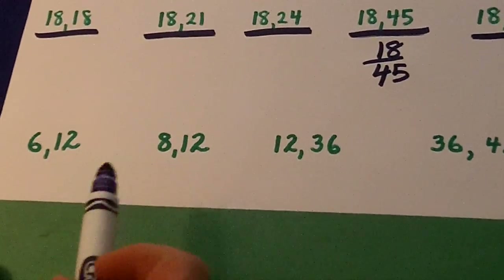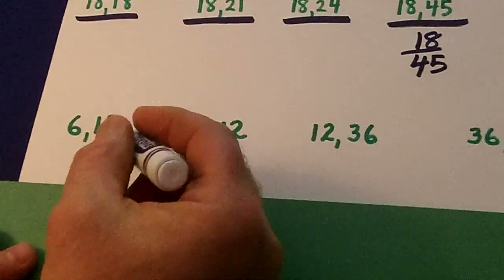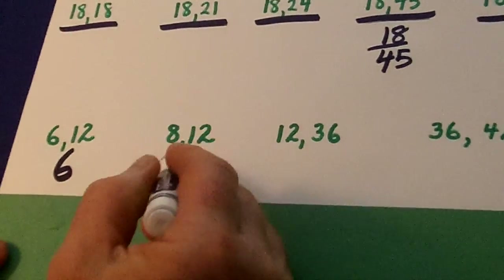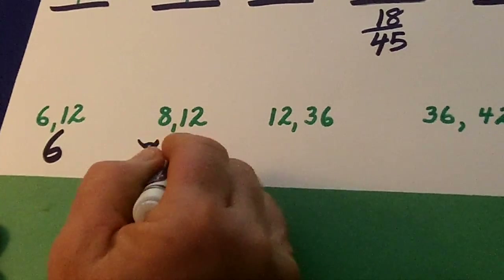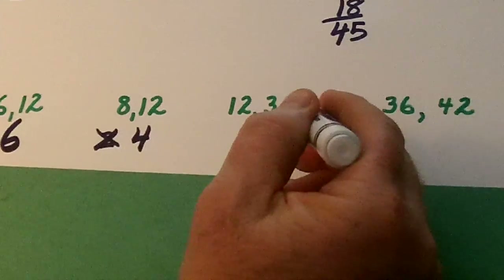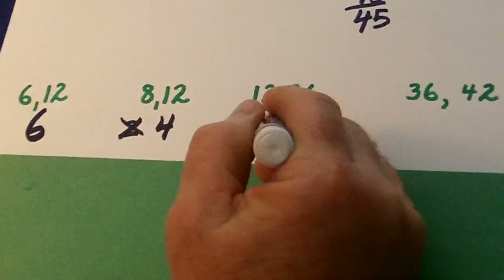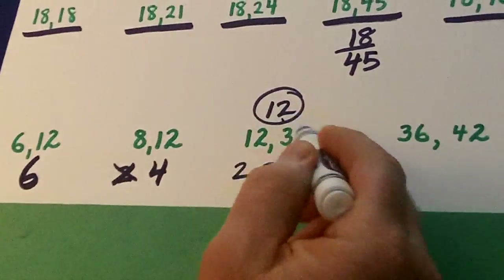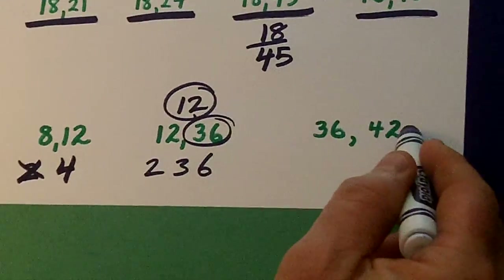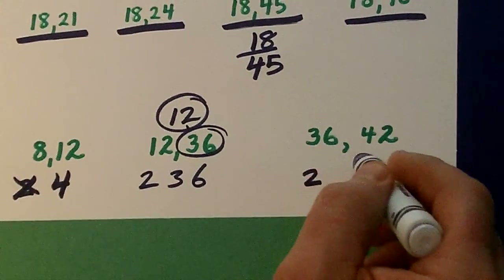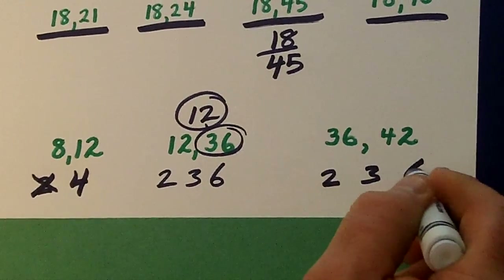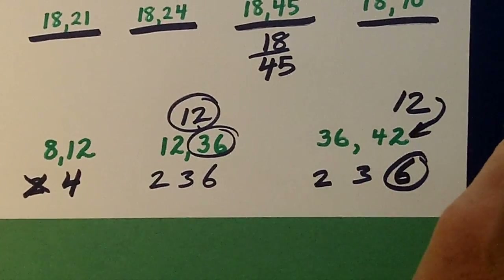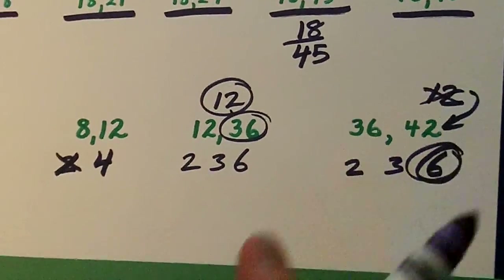What's the biggest number that goes into 6 and 12? 6. The biggest number that goes into 8 and 12? It's not 2 — it's 4; 4 goes into both of those. How about 12 and 36? Well, 2 goes into them, 3 does, 6 does, but it's 12. And 36 and 42? 2 goes into them, 3 goes into them, but 6 is the biggest number — some people might say 12, but 12 does not go into 42 evenly. So the answer is 6.